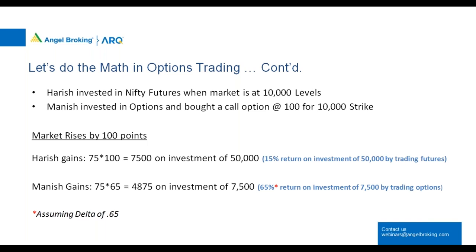If you're an option buyer — either call or put — your loss is restricted to the maximum option premium you pay. But if you're trading futures, your loss can be unlimited. If the market falls 100 points and then falls another 50 or 100 points, the loss could be significant. Whereas in options, the maximum loss is the premium paid — in this case ₹7,500.